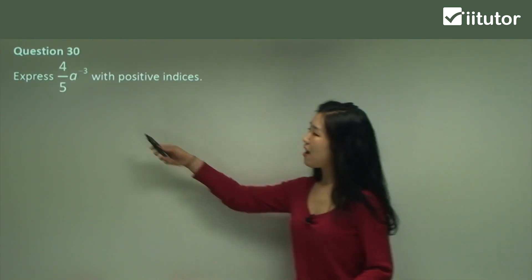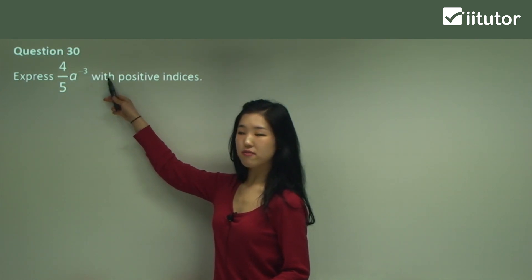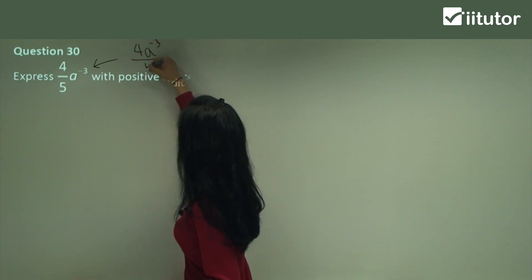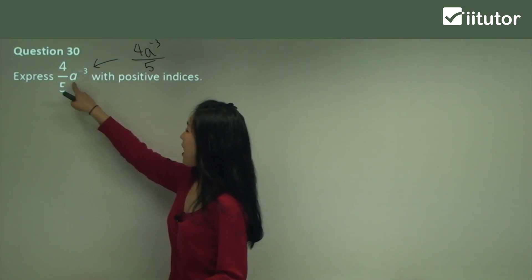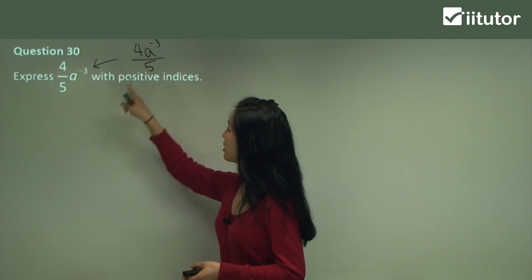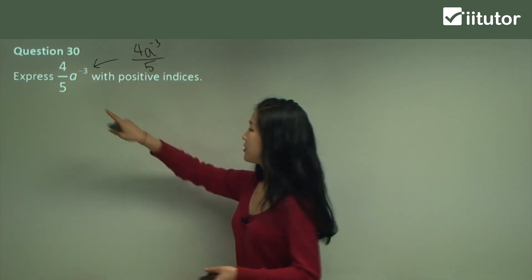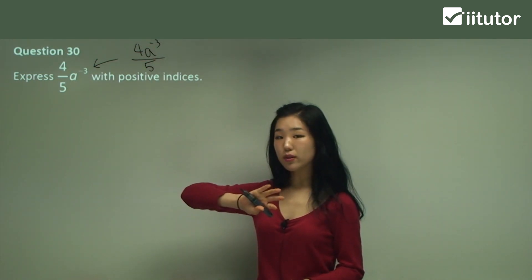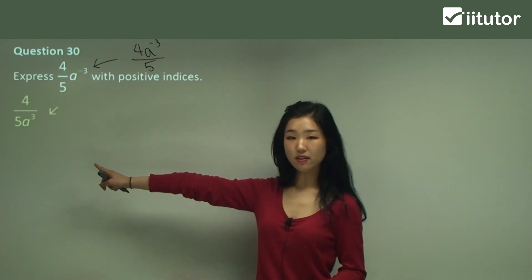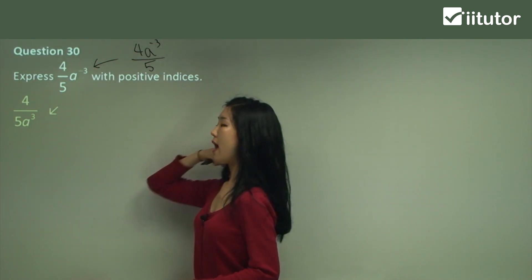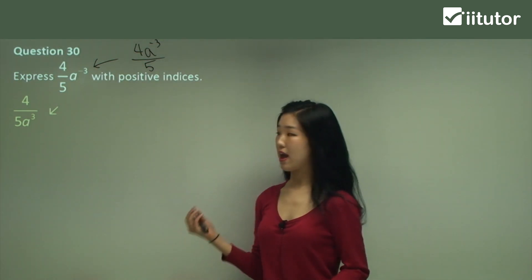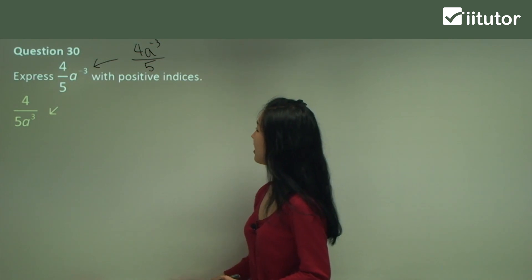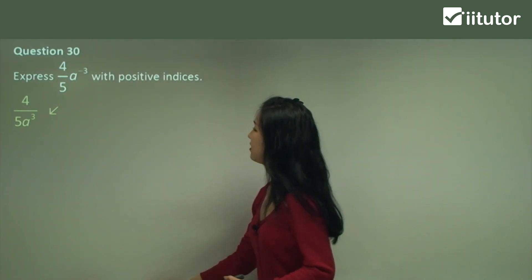Question 30. See how 4 on 5 times a to the power of negative 3 — that's the same thing as 4 over 5 with a to the power of negative 3 on the numerator. Because a to the power of something is with the fraction, we won't apply it to the numerator only. A to the power of negative 3 is on the numerator. Because it's negative index, we're going to move it down to the denominator. So now a is with 5 on the denominator and we make the power positive. A has a power of positive 3 now. All I did is just bring it down to the denominator and change the sign.